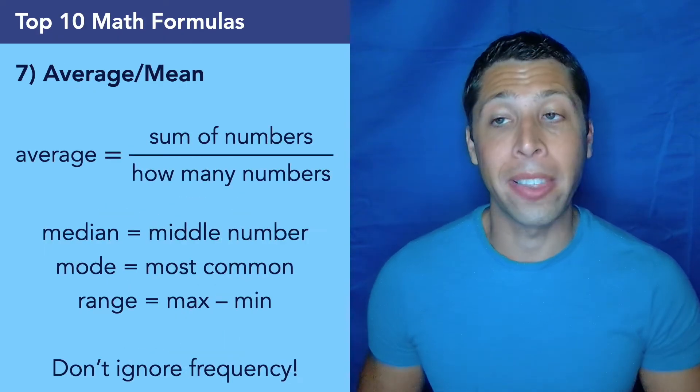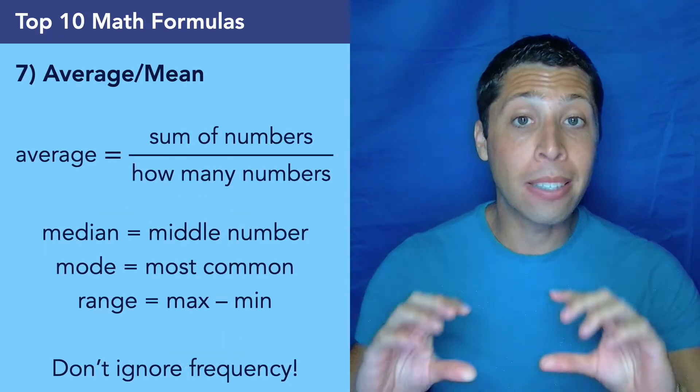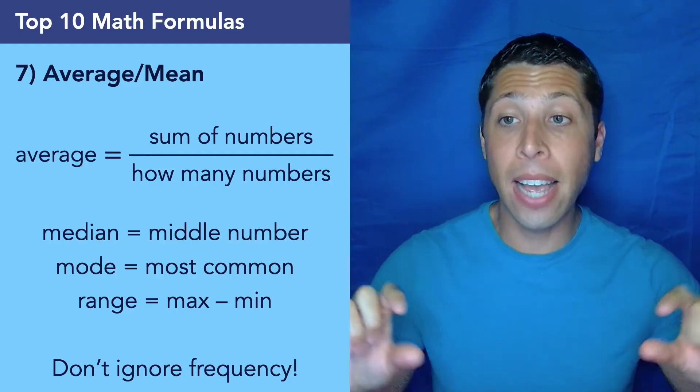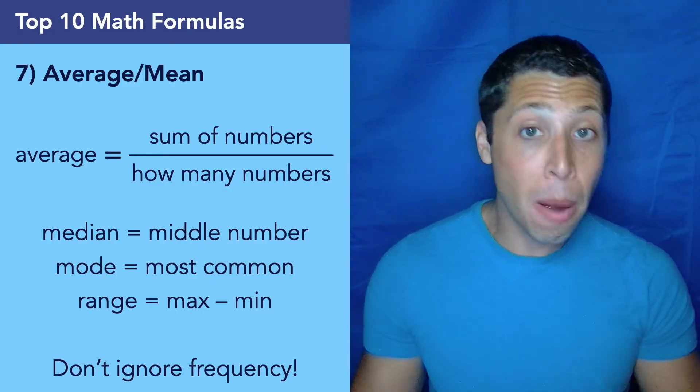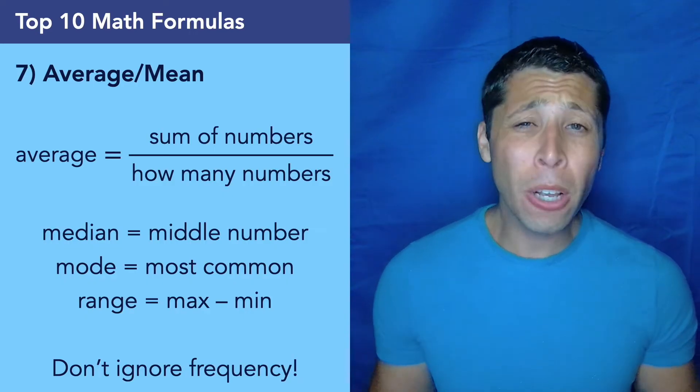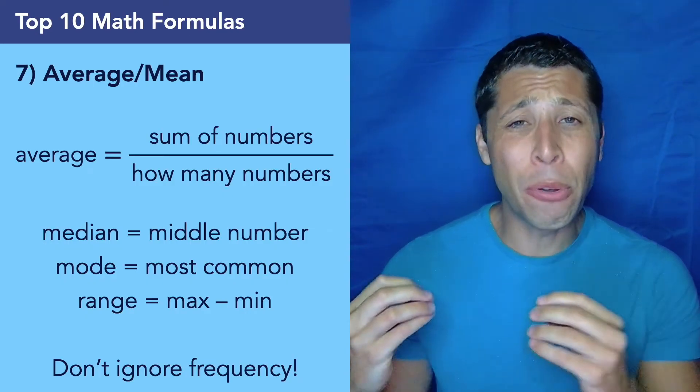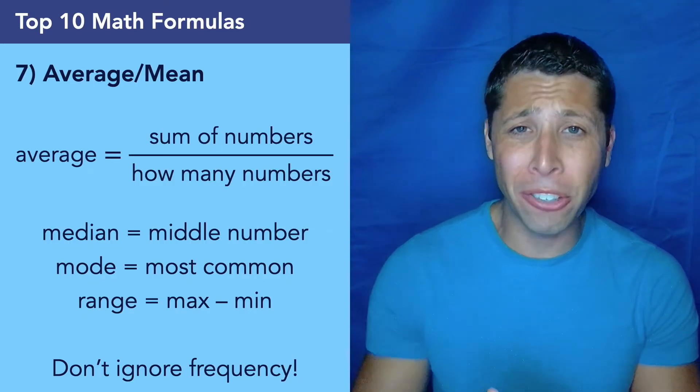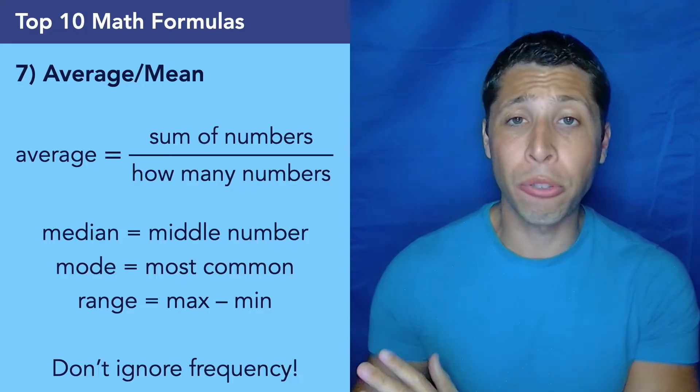Number seven is the statistics formula. The average or the mean is going to be the sum of all of the numbers in a data set divided by how many numbers are in that data set, how many data points there are. So we need to know this formula. And again, if you see that a question is about the average, it mentions the mean, the first thing I would do is write this formula on your page.